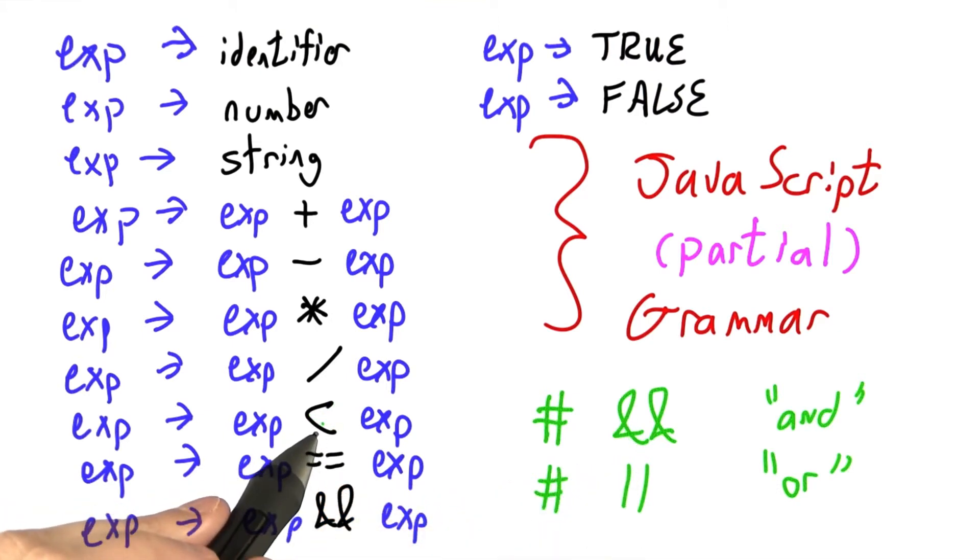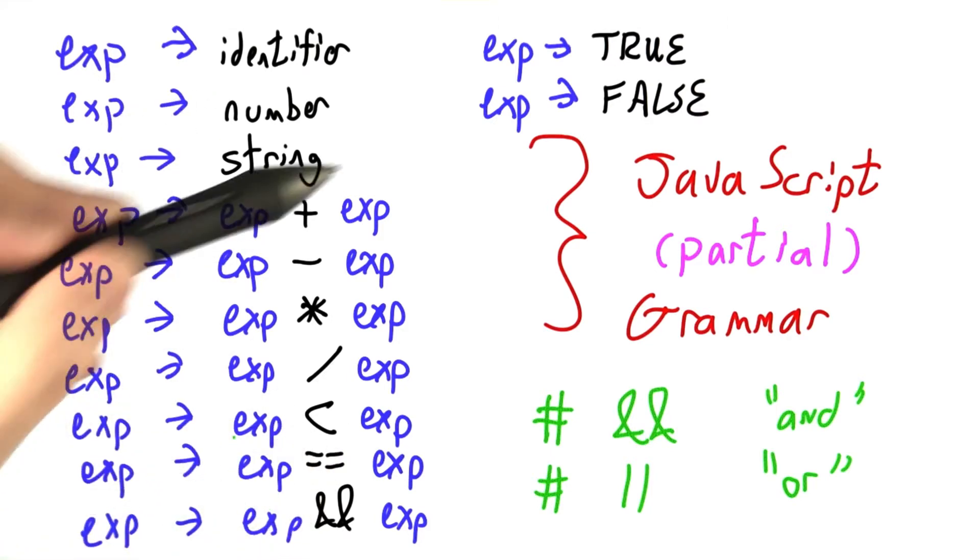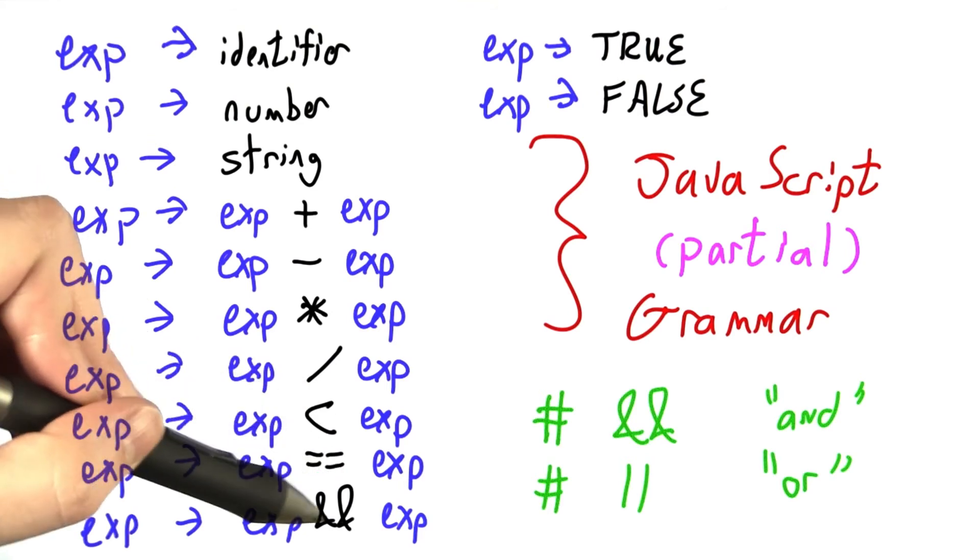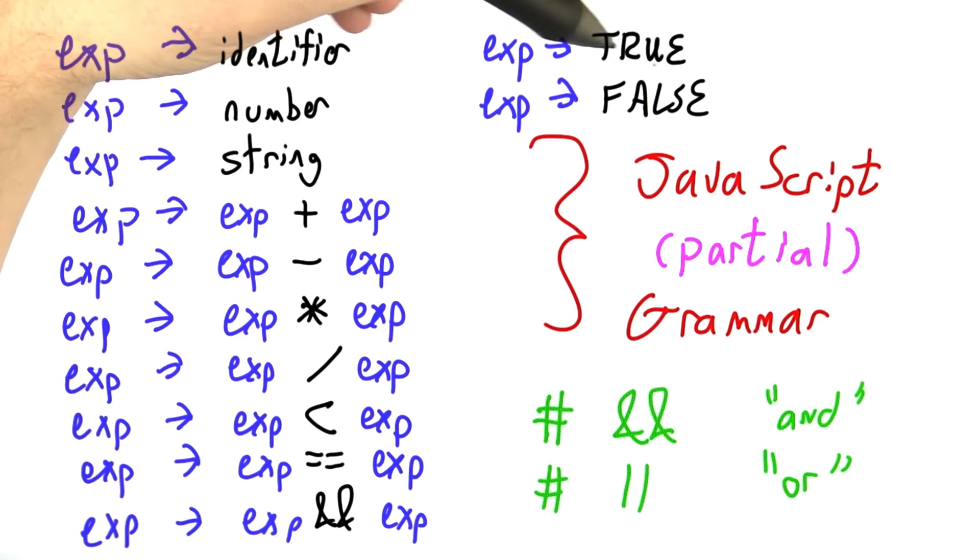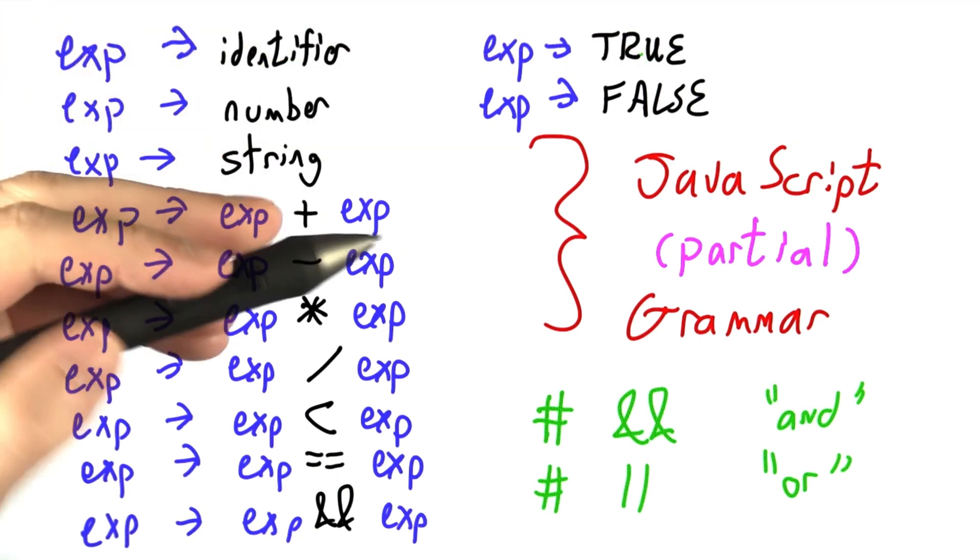And just as we have less than here, there'd also be greater than, greater than or equal to, less than or equal to, many more. This JavaScript expression grammar should be familiar to you because aside from some minor details of spelling, like the equal signs here or the capital word true to mean true, it should be very similar to Python.